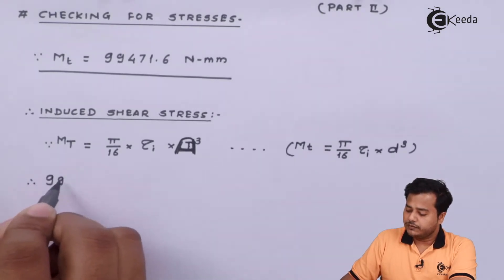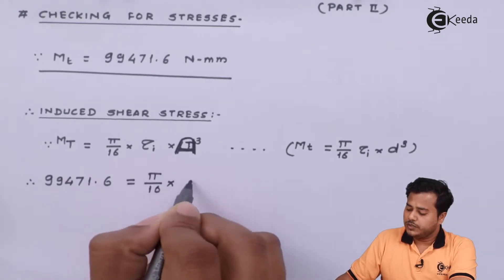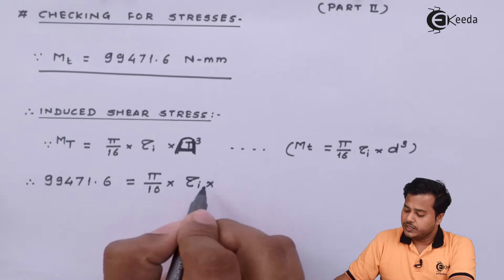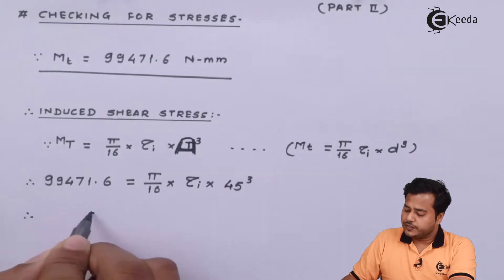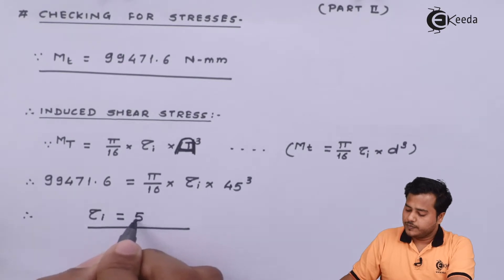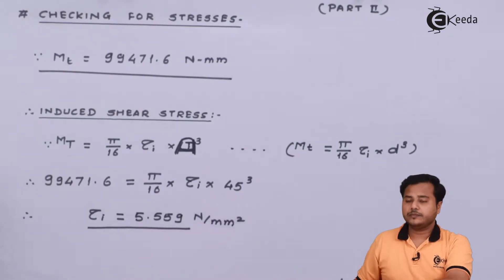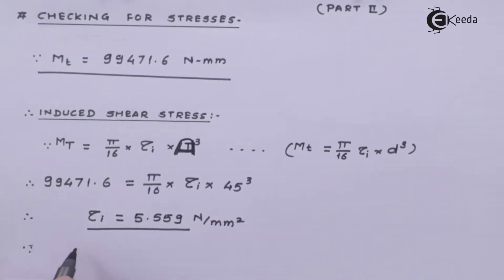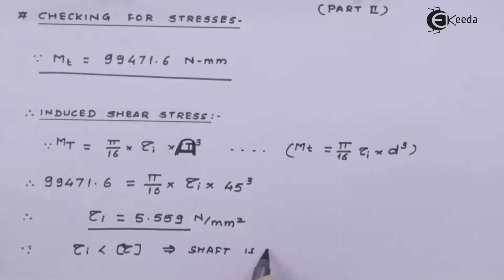The value we have is 99471.6 = (π/16) × τ_induced × 45³. Upon solving, the induced shear stress value is approximately 5.559 N/mm². Comparing this with the allowable value of 37.5 N/mm², we can say that the shaft is safe.